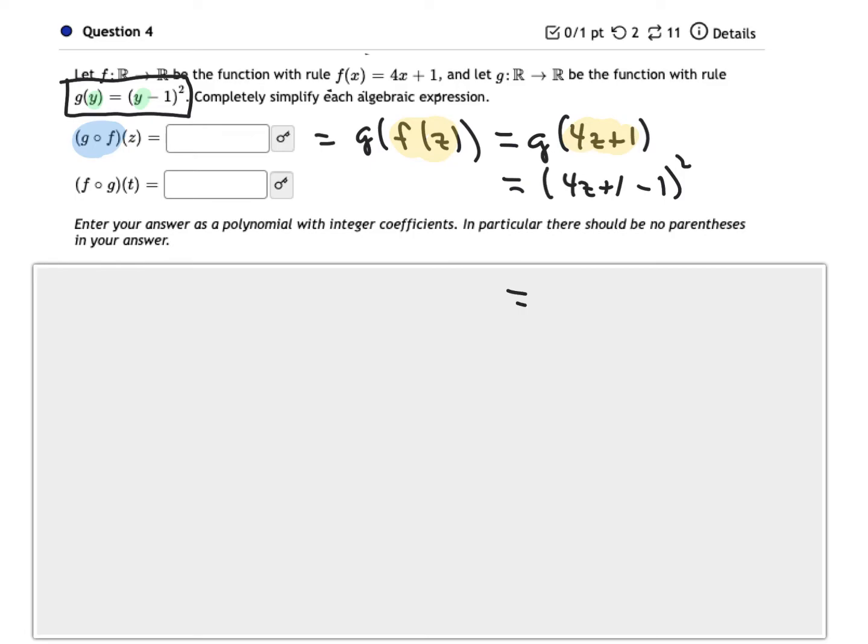Now inside the parentheses, 4z plus 1 minus 1 is just 4z. And so that's 4z squared, which is 16z squared. So the correct answer here would be 16z squared.